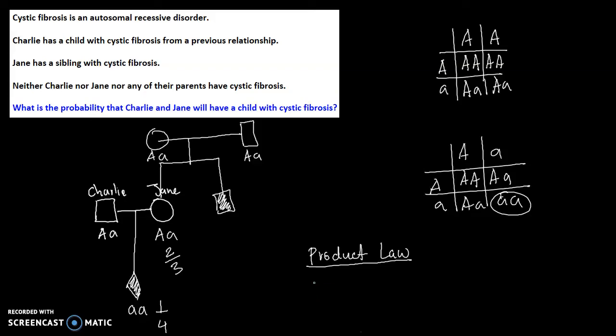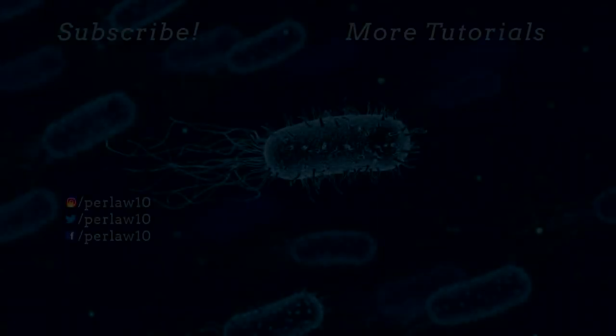Where we take the probability of Jane having this genotype, the probability of the child having this genotype, and multiply them together. We get 2 over 12, which can be reduced to 1 over 6. 1 over 6 is the probability of Charlie and Jane having a child with cystic fibrosis.